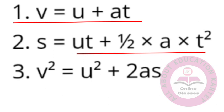S equals UT plus half AT square. T square means time squared; A is the acceleration. Next, V square — V square equals U square plus 2AS. I will help you with basic data.